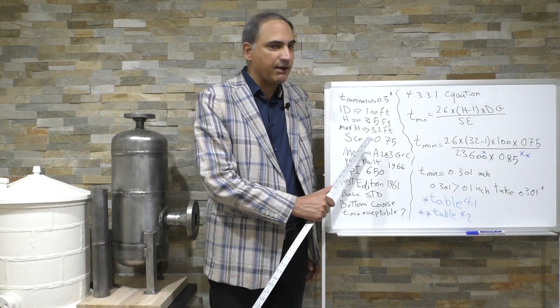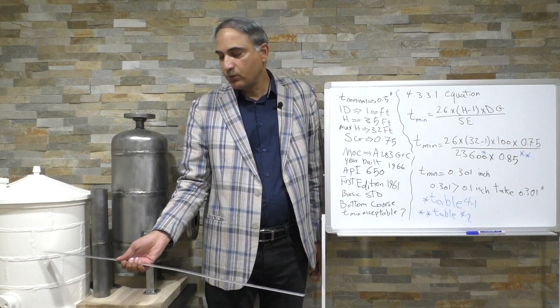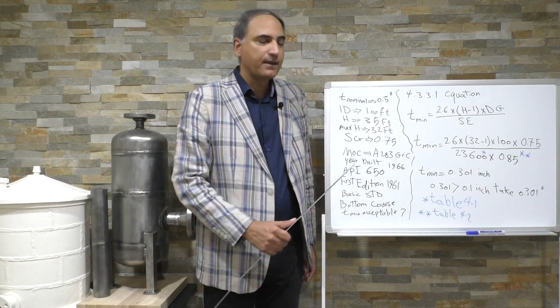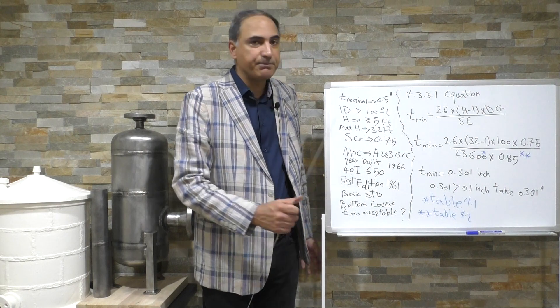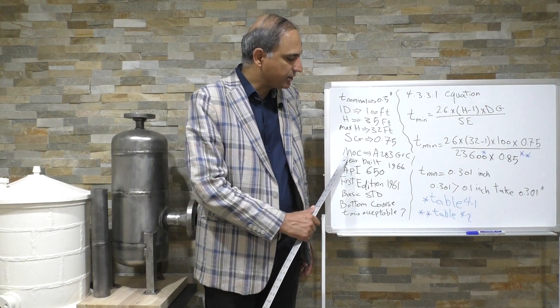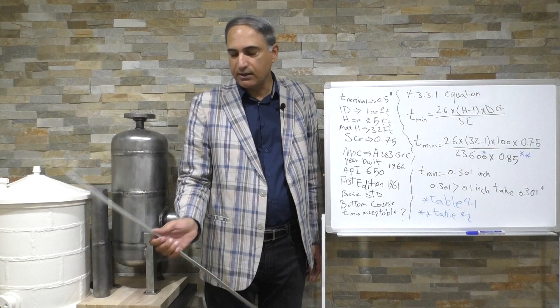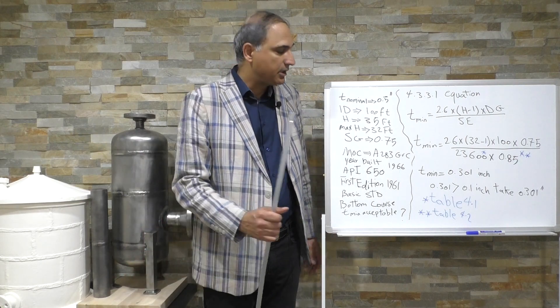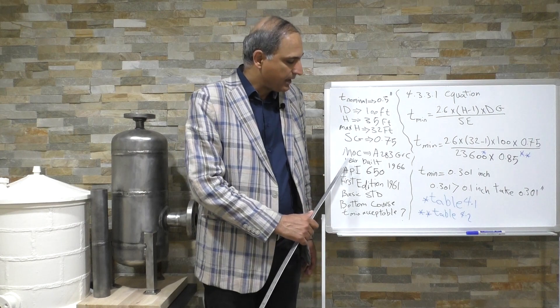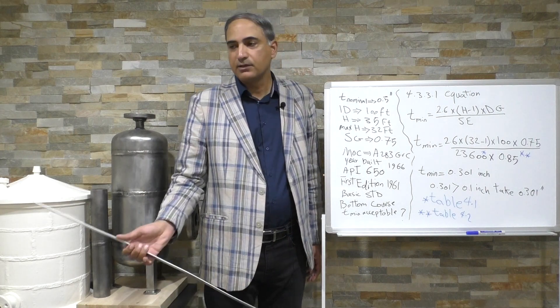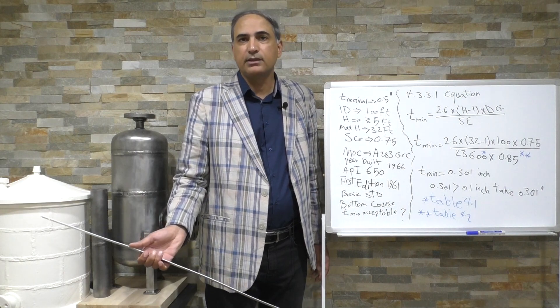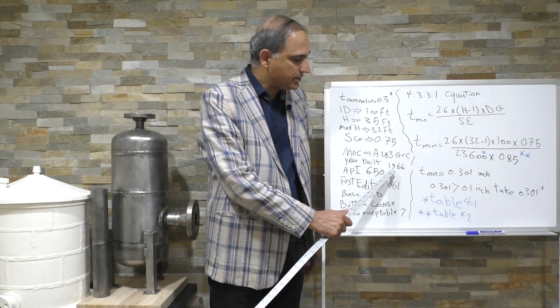Specific gravity for the liquid that is going to be stored on this storage tank is 0.75, it's a petroleum product, and the material of construction is ASTM A283 grade C which is a common carbon steel material. And the year that this storage tank was designed, fabricated, erected and placed in service is 1966.